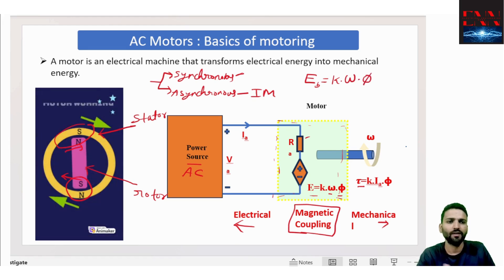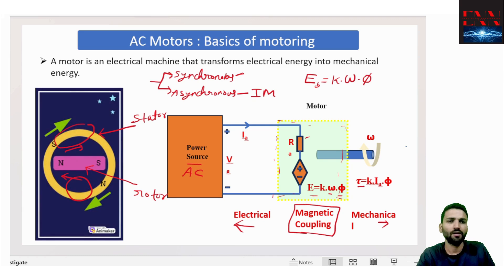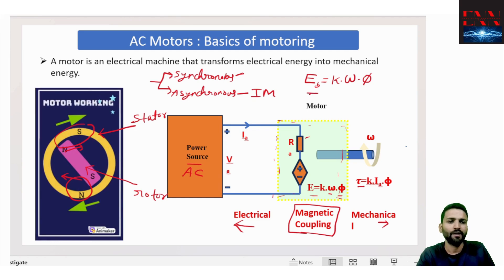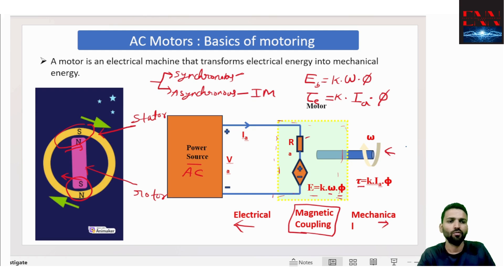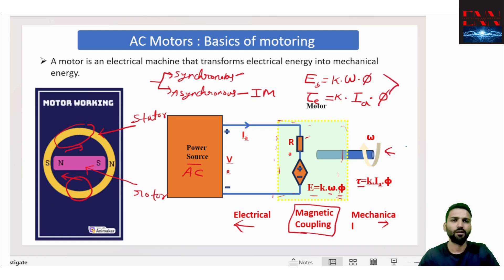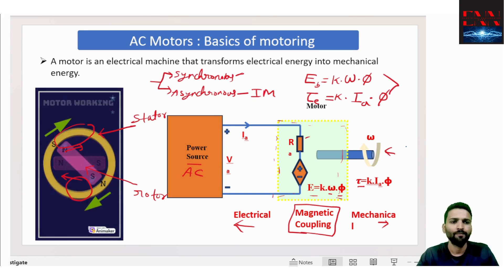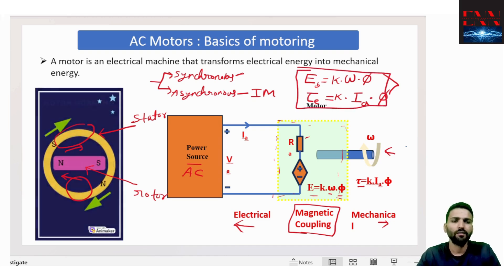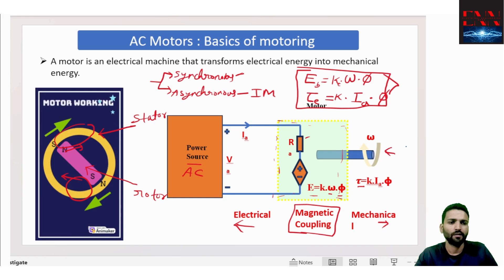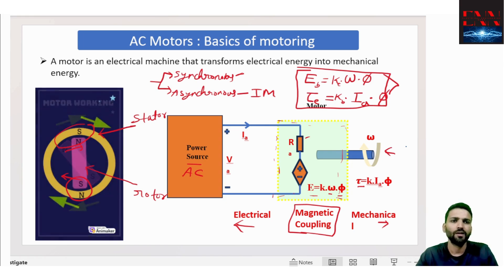Two important things: one is speed, one is flux. Both affect the dependent source — the back EMF. On the output side there is torque, and torque depends on two things: the current flowing into the motor, known as IA (armature current), and flux. Flux is very, very important. More flux means more EMF, more torque. More speed means more EMF. More current means more torque. This is the elementary equation you need to learn and understand. If you remove the k constant, these are proportional to their respective variables.